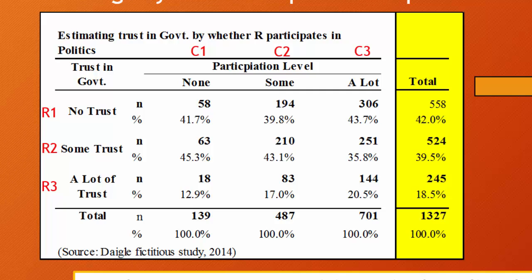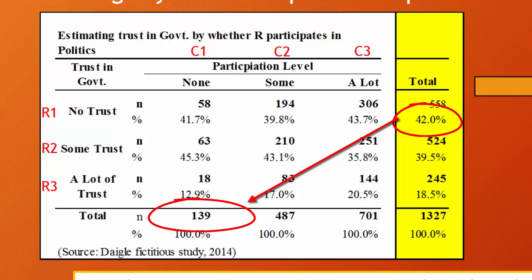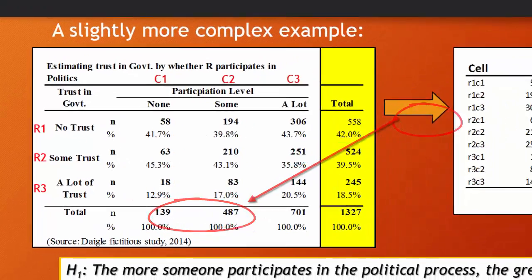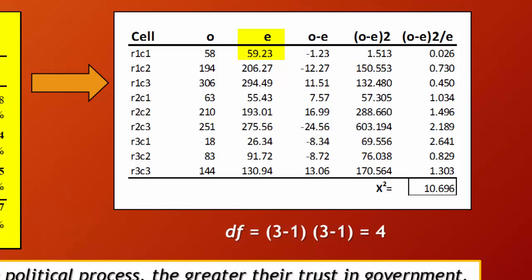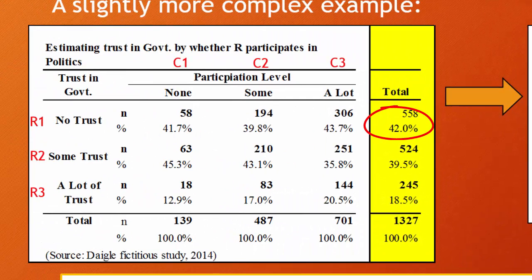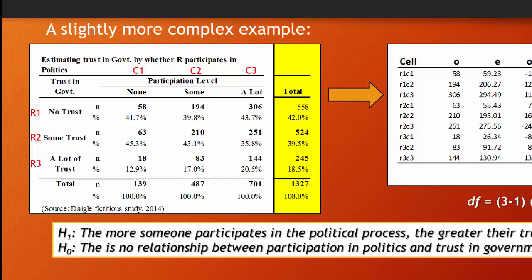To calculate expected cell counts, multiply the percentage by the column total count. To determine the expected cell count in R1C1, take 0.42 × 139 (total who don't participate at all) = 59.23. For R1C2, take 0.42 × 487 (those who participate some) = 206.27. For R1C3, it's 0.42 × 701 = 294.49.